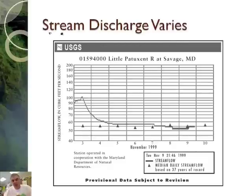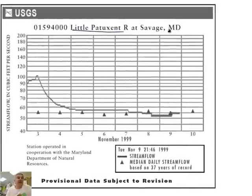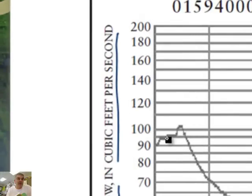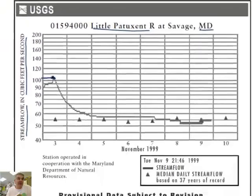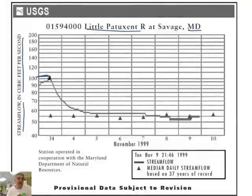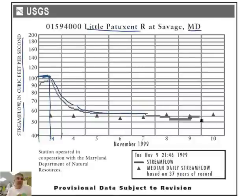The problem with stream discharge is that it actually varies — you don't always have the same amount of water coming through a stream at a particular time; sometimes more, sometimes less. This is a graph from the Little Piney River in Maryland. You can see the stream flow in feet per second. It was most prominent on the 3rd of November, and then you can see how it varied over time, dropping so that by the 9th or 10th you're only getting about 55 cubic feet per second. So you see it changes over time.